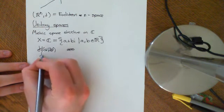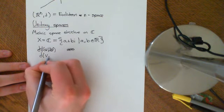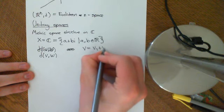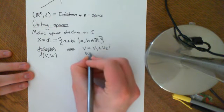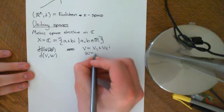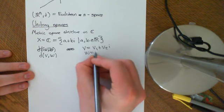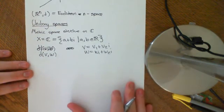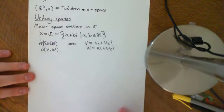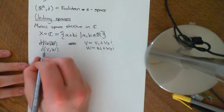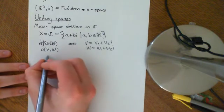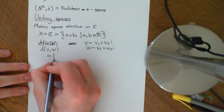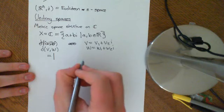We'll take two complex numbers: D(V, W), where V = V1 + V2i and W = W1 + W2i. If we want to take the distance between V and W, the way we're going to define the distance is we're going to define it as the modulus — the complex number modulus.